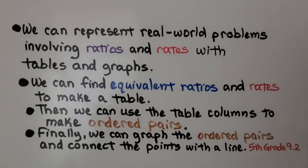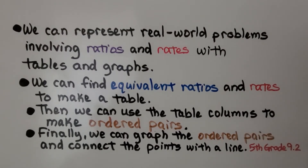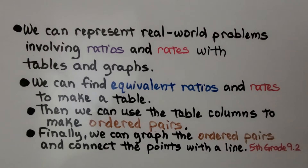We can represent real-world problems involving ratios and rates with tables and graphs. We can find equivalent ratios and rates to make a table. Then we can use the table columns to make ordered pairs. Finally, we can graph the ordered pairs and connect the points with a line.